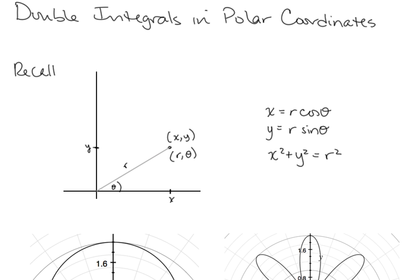Let's start by recalling what we know about polar coordinates. In the two-dimensional plane we can identify a point either in its x and y Cartesian coordinates, where x is the distance over and y is the distance up, or using polar coordinates, where r is the length of the segment from the point to the origin and theta is the angle that segment makes with the positive x-axis. The relationships are: x equals r cosine theta, y equals r sine theta, and x squared plus y squared equals r squared.